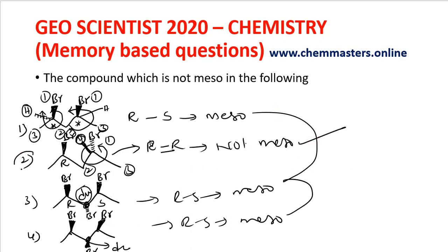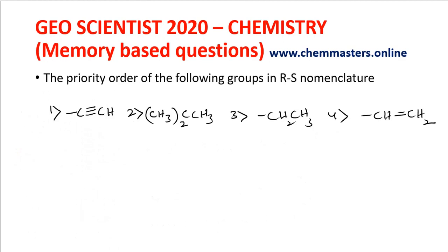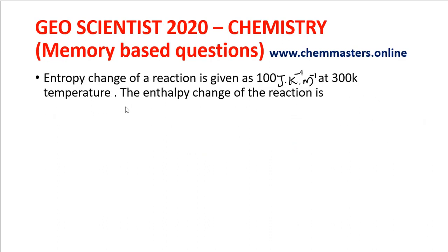Next question: the priority order of the following groups in RS nomenclature. This is a simple question — first priority for this group, second, third, and fourth priority in order.